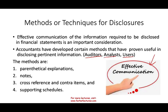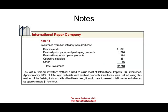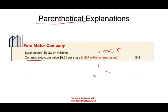Here is an example of parenthetical explanation. You have common stock, and in parentheses you show how many shares are issued. This information doesn't have to be on the face of the statement — it could be in the notes — but here they are putting the numbers directly on the face of the financial statement. That's one way to do it.